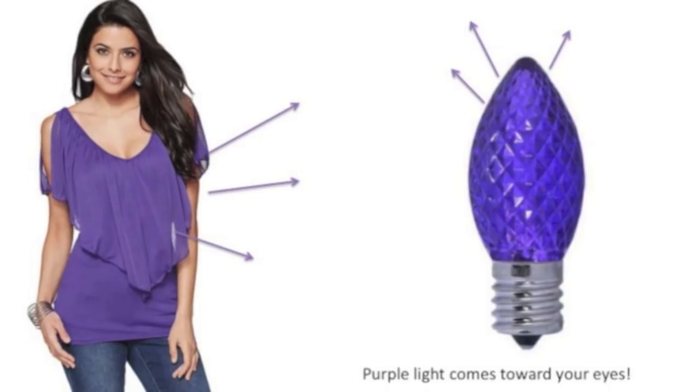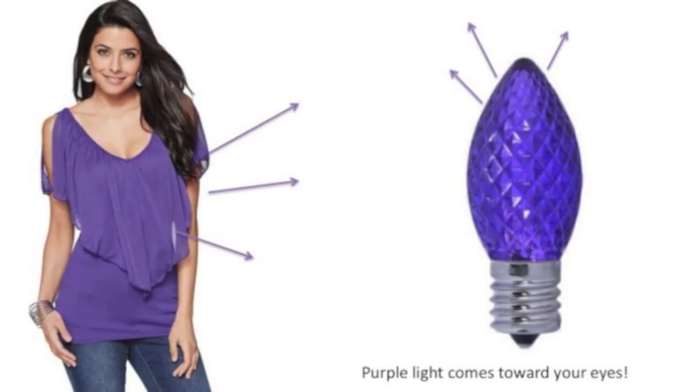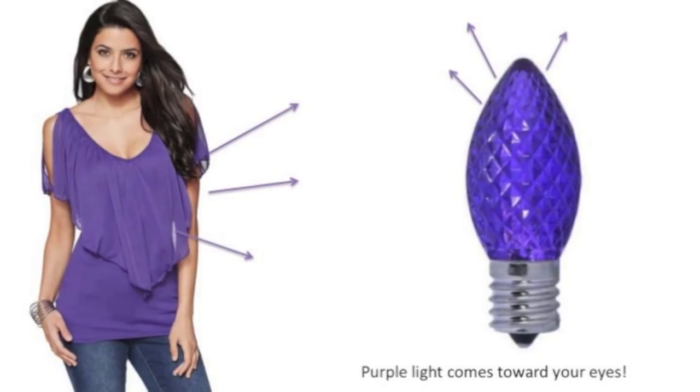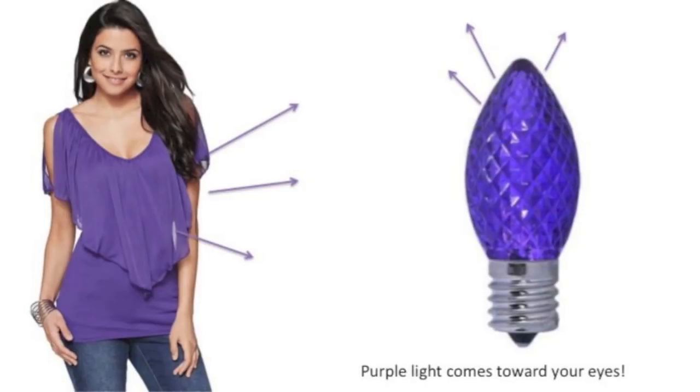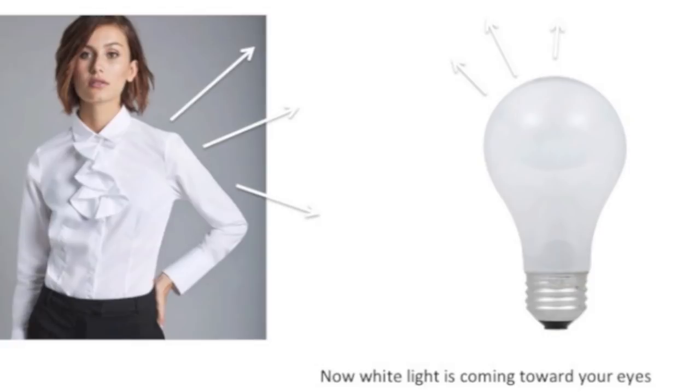In the same way, the purple light bulb will emit purple wavelengths. But either way, purple is traveling toward your eye. Now we have red. Same story - red wavelengths are traveling toward your eye one way or another. The light bulb is emitting it, the shirt is reflecting it. But at the end of the day, red is traveling toward your eye. But what is happening with white?